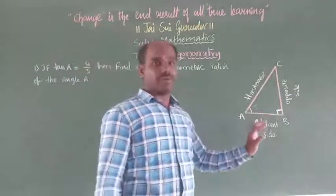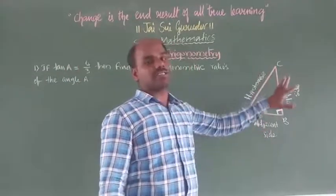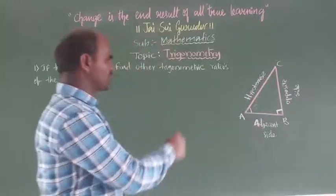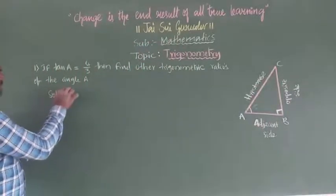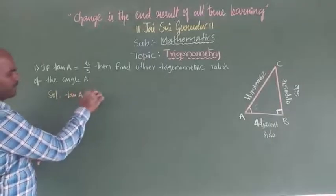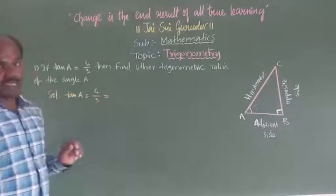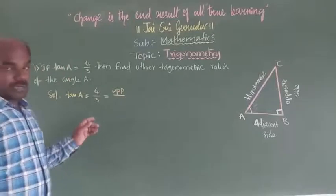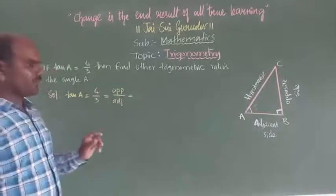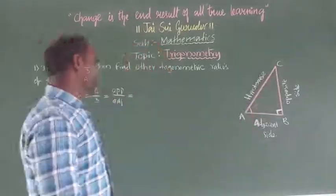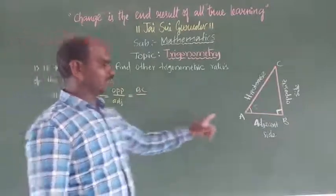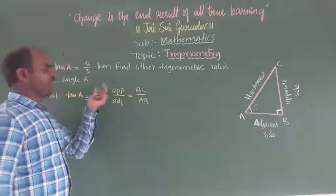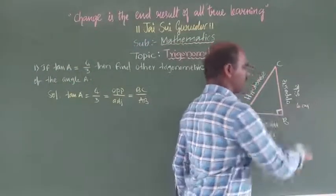Tan A is equal to 4 by 3 is given. For this angle A, this is opposite, adjacent, and hypotenuse. Based on that, the solution: tan A equals 4 by 3. The tan ratio is opposite by adjacent. So the opposite for angle A is BC, and adjacent is AB. Therefore BC is equal to 4 centimeters and AB is equal to 3 centimeters.